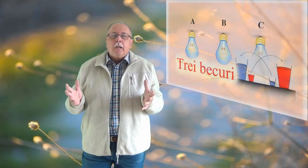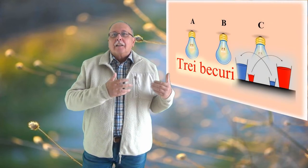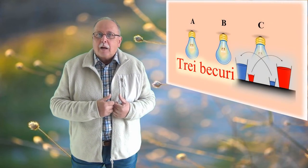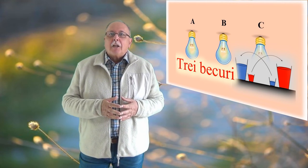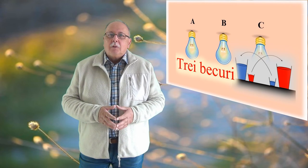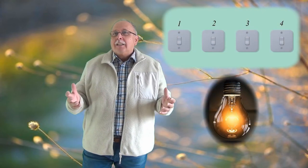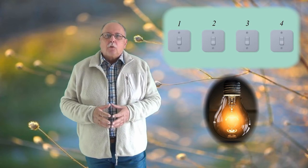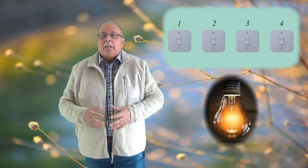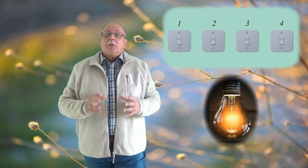Și acum să vedem întrebarea de azi. Cu multă vreme în urmă, am pus o întrebare despre o cameră cu 3 becuri și 3 întrerupătoare care se găseau în exteriorul camerei. Dacă nu știți despre ce este vorba și vreți să vă puneți mintea la încercare, găsiți link-ul în descriere. Azi vă voi pune o întrebare în care avem un bec și 4 întrerupătoare. Întrebarea: Într-o cameră se găsește un bec. În exteriorul ei, într-un loc din care nu se poate vedea interiorul camerei, se găsesc 4 întrerupătoare.